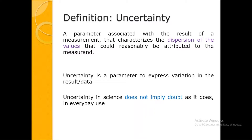Uncertainty is therefore a parameter to express variation in the result — like plus or minus two centimeters. In science, uncertainty does not imply doubt; it simply means deviation. And you are sure about that deviation — that is the more important point.